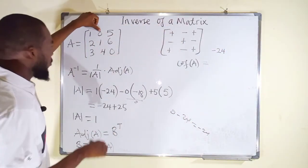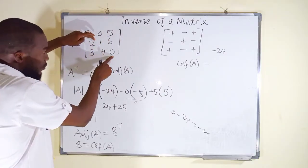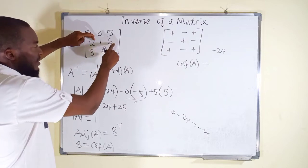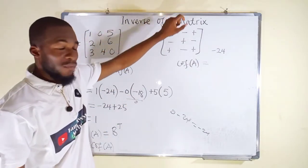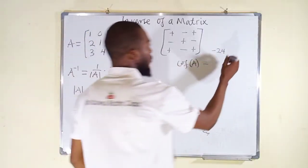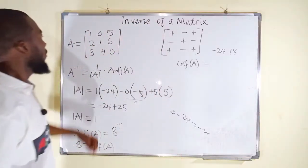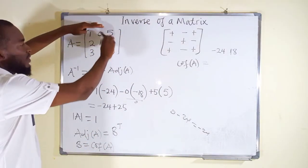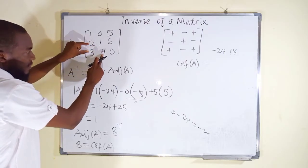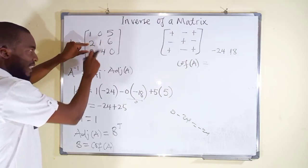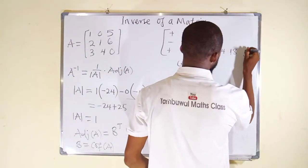For the second entry: we close its row and column. We get 0 minus 18, which is minus 18. But the sign there is negative, so it changes to positive 18. Moving to the third entry: we close its row and column. We get 8 minus 30, which gives 5. It is positive, so we have positive 5.